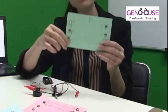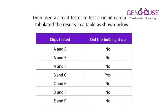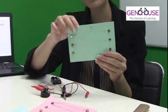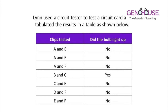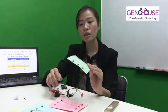Every single result in the table has to match. It's not enough that B and C lights up — the card must also show that when A and B are clipped, the light bulb does not light up, and the same for A and E, A and F, and all the other pairs listed in the table, before we can confirm it is the card Lynn used.